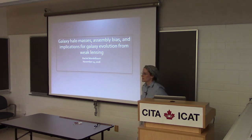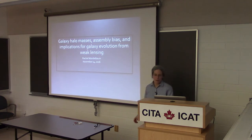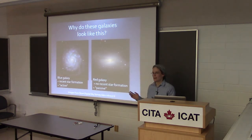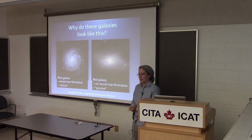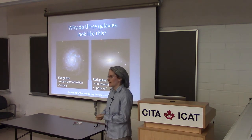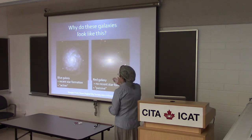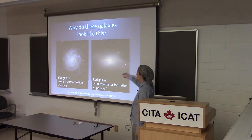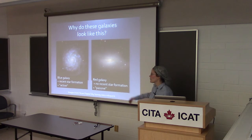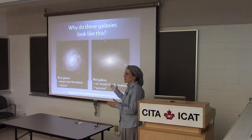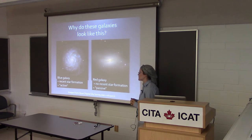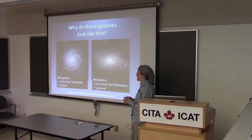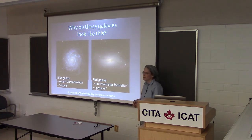My talk today is going to be about how we can use weak gravitational lensing and other measurements of large-scale structure to answer questions like: why do these galaxies look the way they do? Why do they emit as much light as they do? Why do they have this morphology — the blue galaxies with a spiral morphology, red galaxies, dispersion-dominated? We know the blue galaxy being blue is indicative of recent star formation, so we call this galaxy actively forming stars, versus the red galaxies which are more passive with no recent star formation.